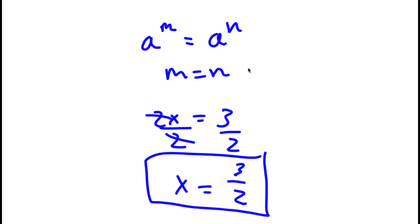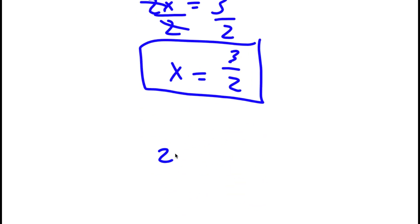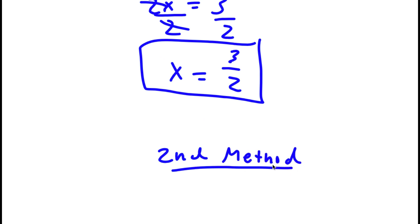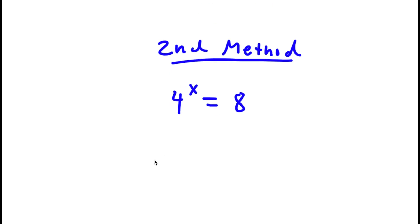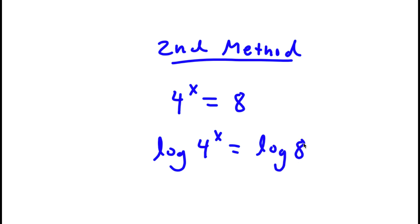Now, there's actually a second method of solving this problem. So again, I first start with 4 to the power of x is equal to 8. But this time, I'm going to take the log on both sides. So now I have log 4 to the power of x is equal to log 8.